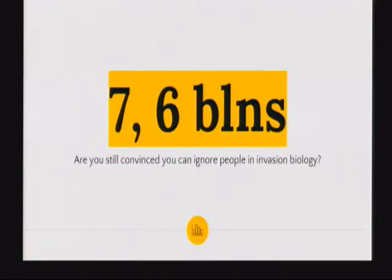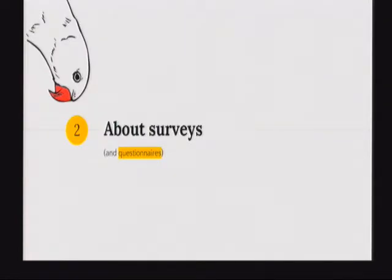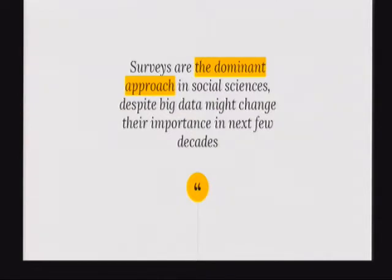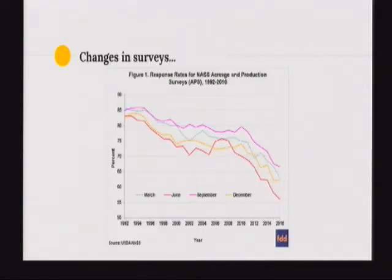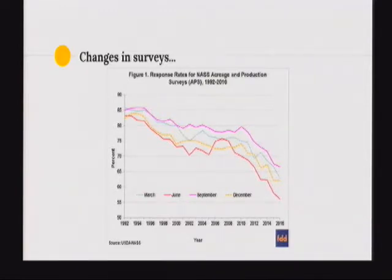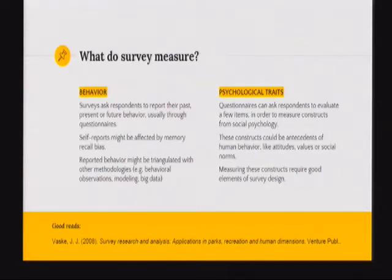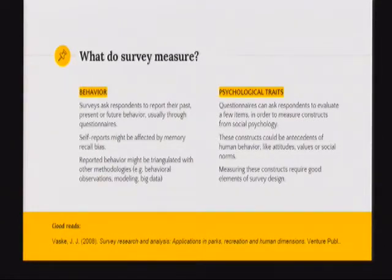My presentation will focus on surveys and questionnaires because they are the dominant approach in social sciences over the last 40 years. The vast majority of social sciences and human dimension studies have adopted questionnaires. Despite things becoming more difficult — we are continuously overexposed to surveys so response rates are dropping sharply — they are still quite cost-effective. They allow us to measure human behavior in the form of self-reports and, at a higher level, psychological traits like attitudes and values. There is a whole book about survey research which I'll share with the presentation.